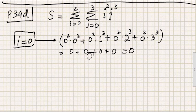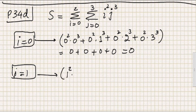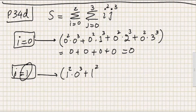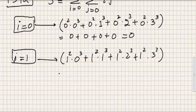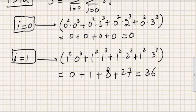Then we change i from 0 to 1. We get 1 squared times 0 cubed, plus 1 squared times 1 cubed, plus 1 squared times 2 cubed, plus 1 squared times 3 cubed. This becomes 0 plus 1 plus 8 plus 27, which equals 36.